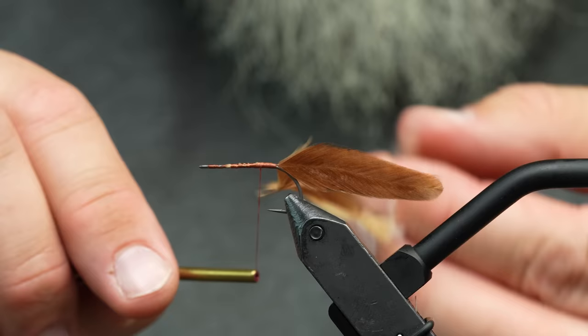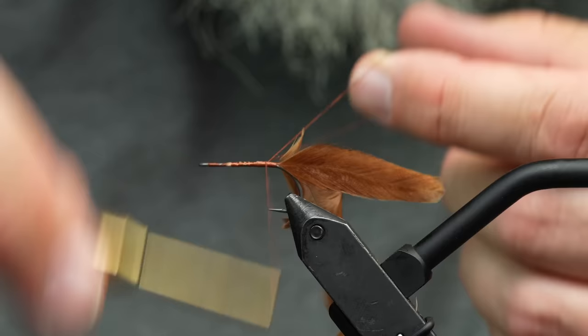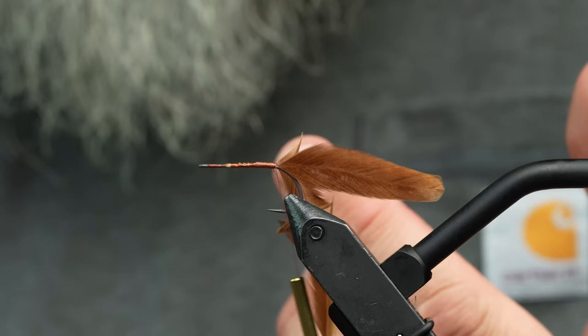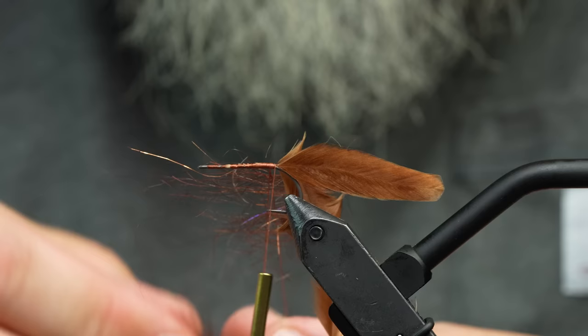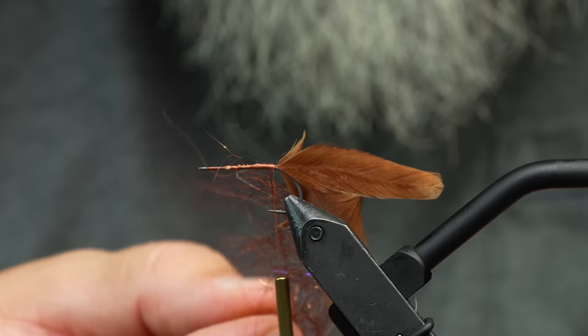This is a really cool new dubbing from Fulling Mill called Voodoo Streamer Dub. Consistency is kind of like a seal substitute, kind of like a semi seal, but really, really cool. This is a color called Dark Brown Copper UV. Yeah, all the colors you want to hear when you want to catch fish. So I'm gonna make a dubbing loop out of this. About that long.